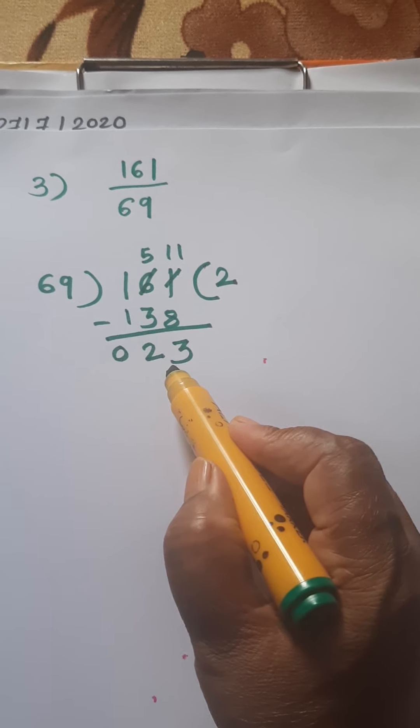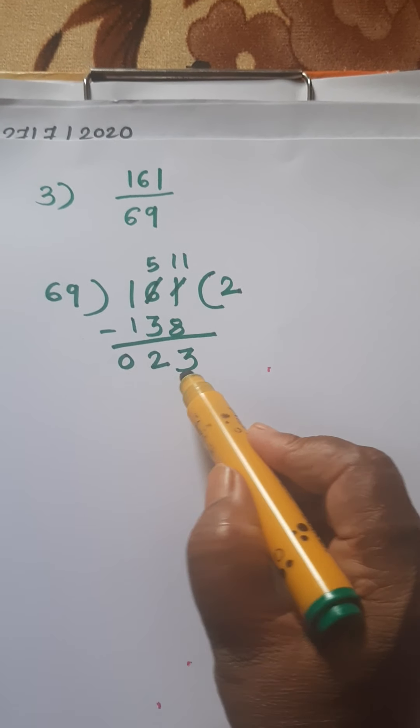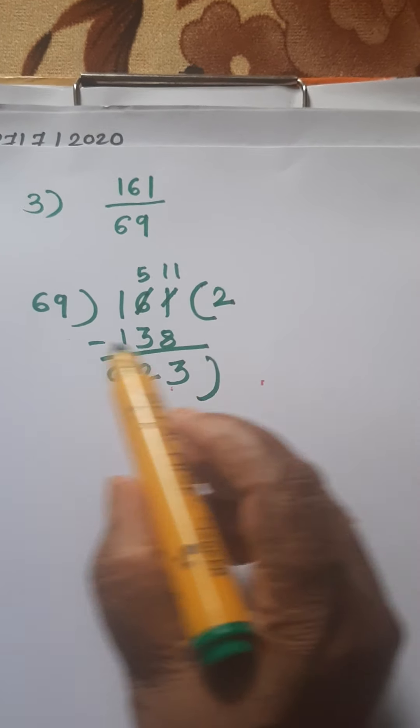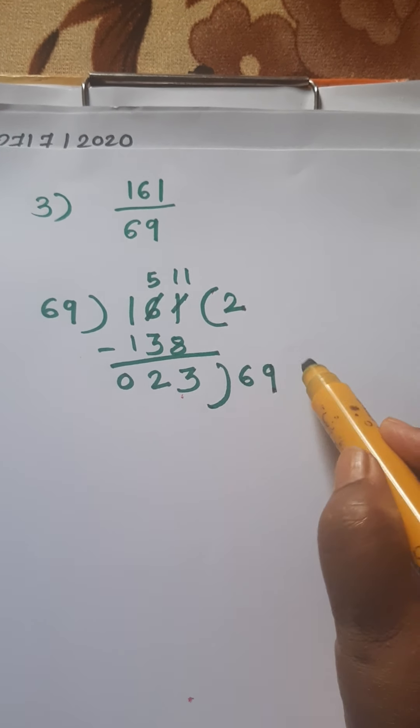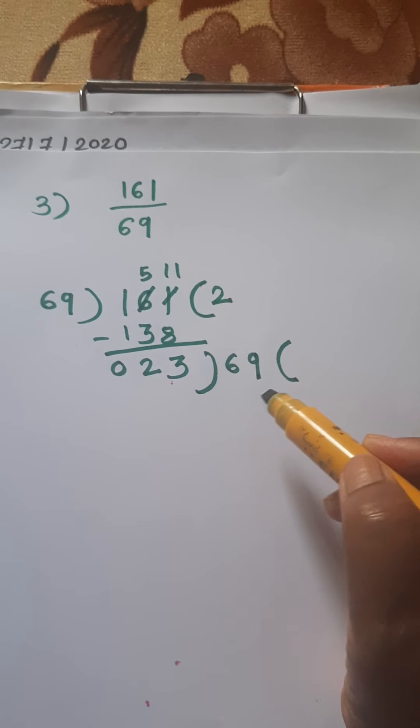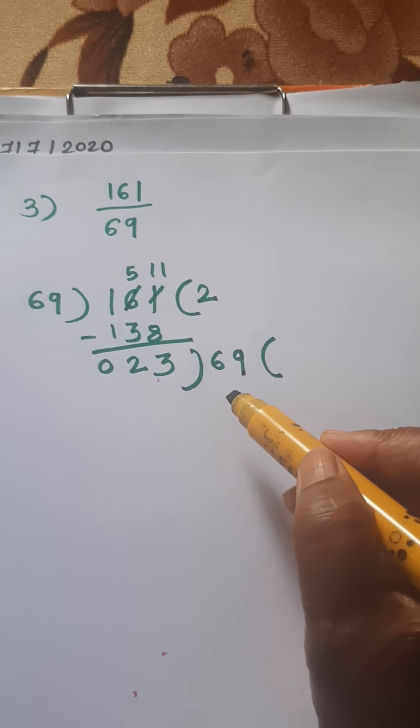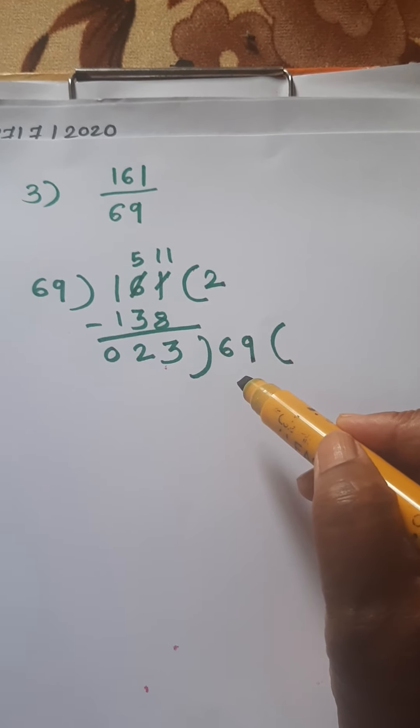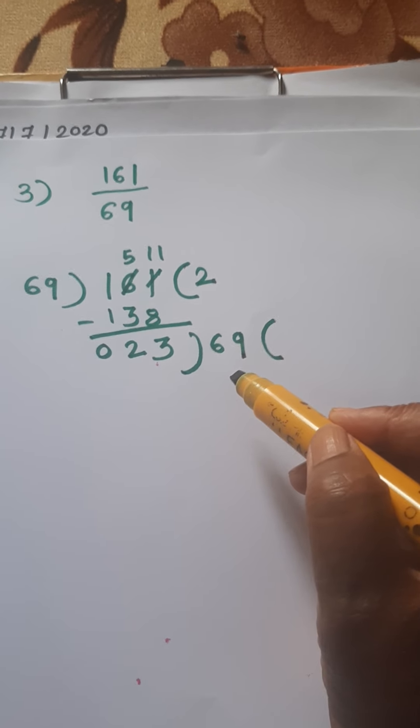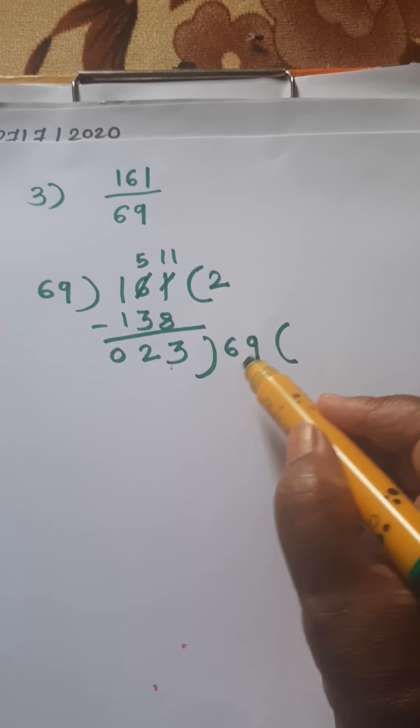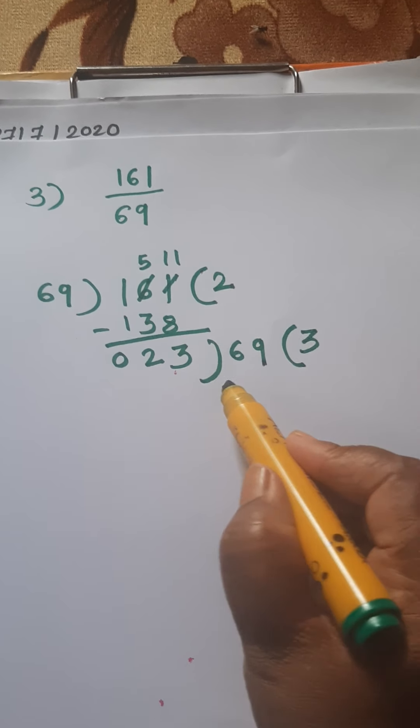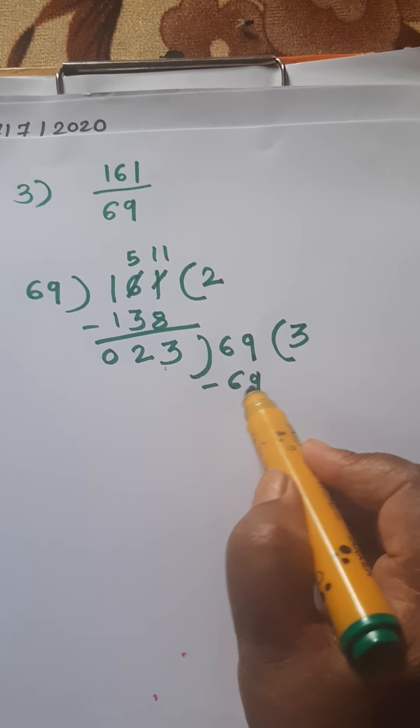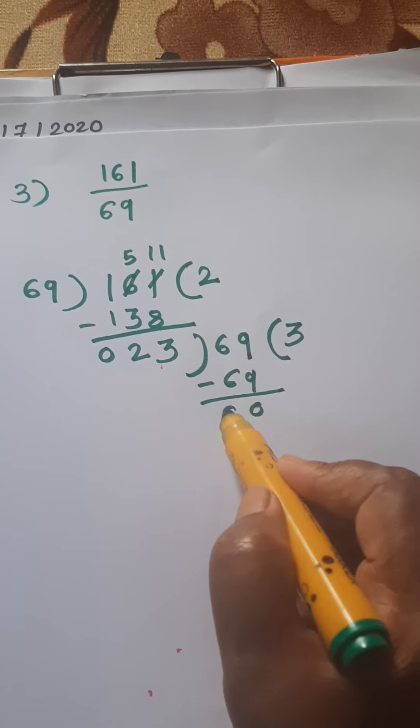Now this remainder becomes divisor and the first divisor 69 becomes dividend. Again, say table of 23. 23 ones are 23, 23 twos are 46, 23 threes are 69. 69 minus 69 is 0.